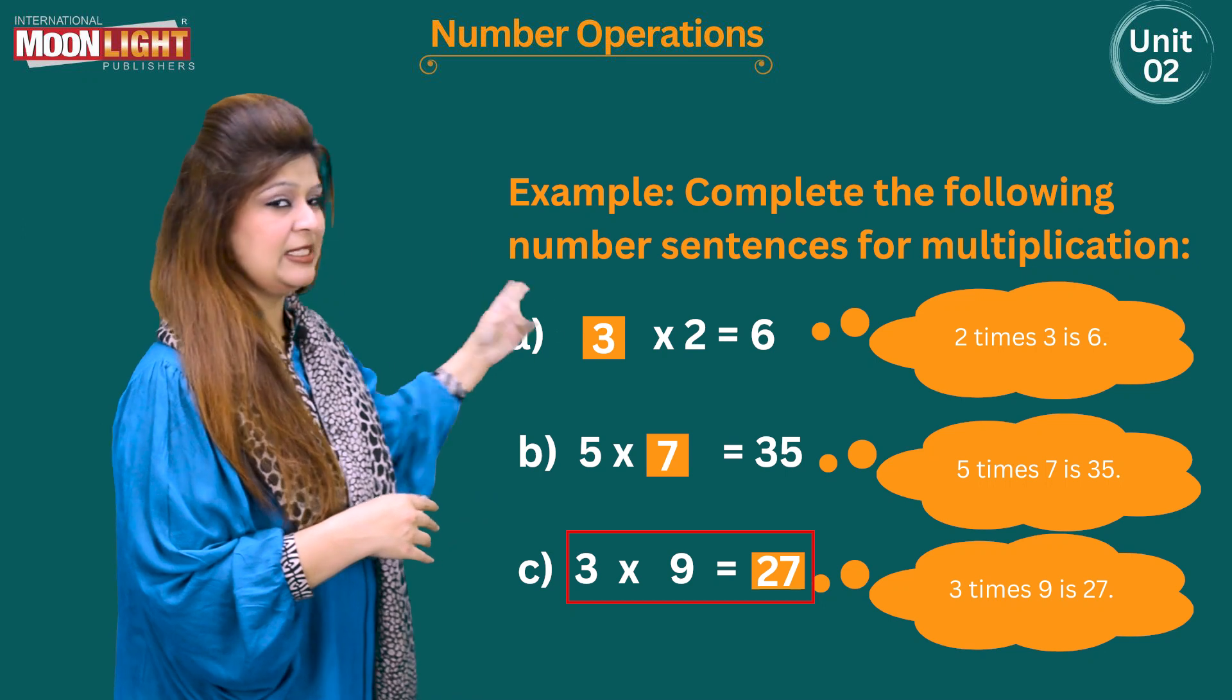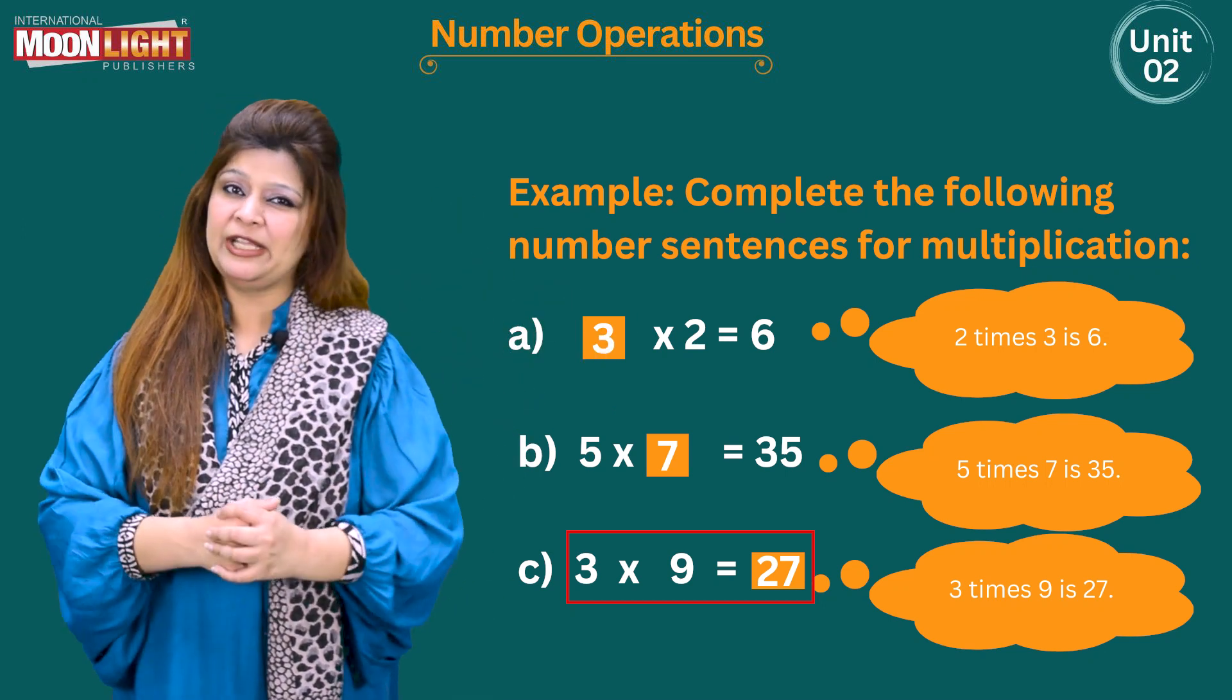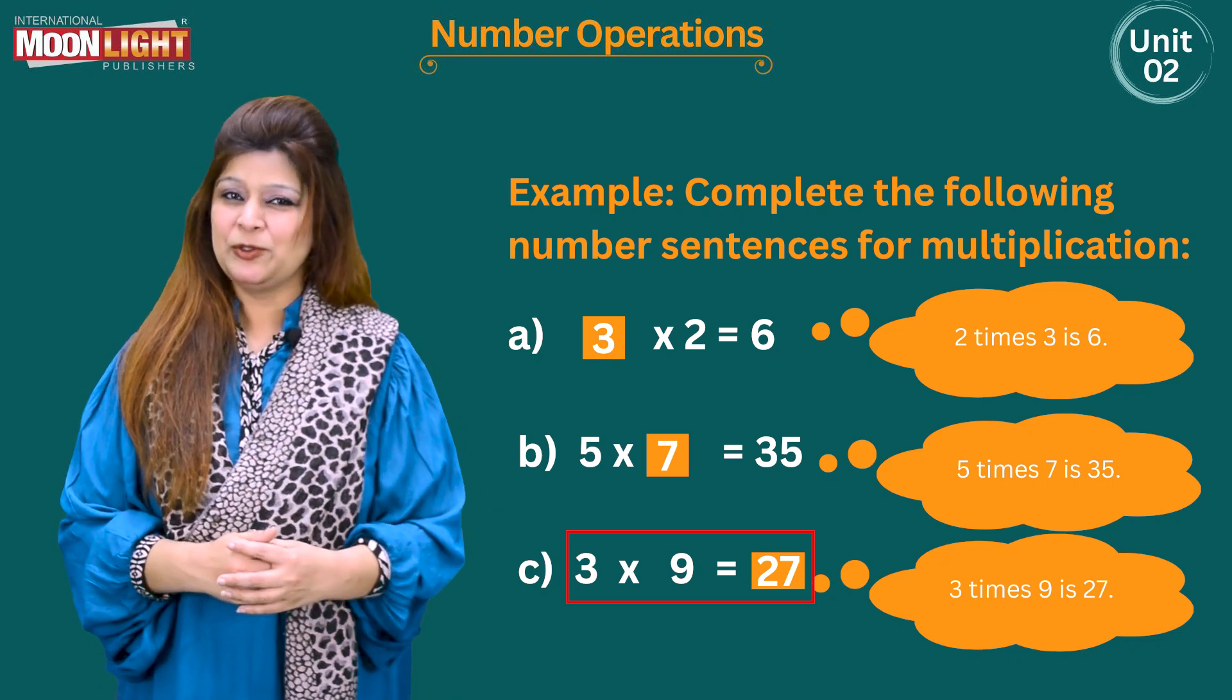So you need to write down the number 27 over here in this empty box by recalling 3 times table. As you know it, 3 times 9 is 27.